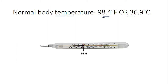Now we will learn how to read the scale correctly. As you see here, the thermometer is graduated in both Celsius and Fahrenheit scales. Fahrenheit is the usual way of expressing body temperature because of its greater sensitivity. In this example, the thermometer measures 98.6 degrees Fahrenheit.